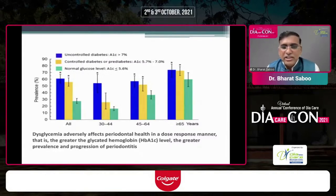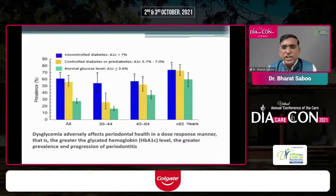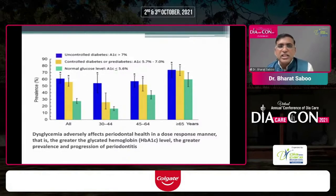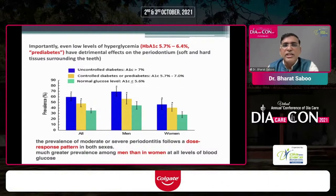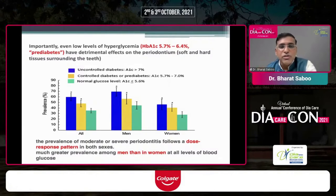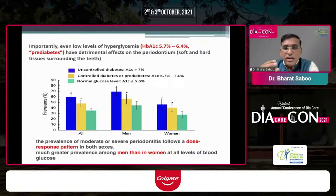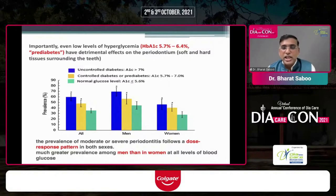Dysglycemia adversely affects periodontal health in a dose-response manner — the higher the A1C, the greater the prevalence and progression of periodontitis. As you can clearly see in this graph, as age increases periodontitis prevalence increases, and with increasing A1C it increases further. Even lower levels of hyperglycemia — A1C from 5.7 to 6.4, which we call pre-diabetes — have a detrimental effect on the periodontium. This pattern is more common in men compared to women, possibly due to eating habits.